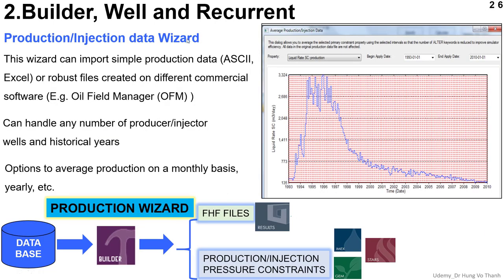Now we continue with the important section: production and injection data. When we talk about this, the data is related with the history matching in general. When your model or your field starts to produce for several years, they make the record for production data, production rate, measured pressure at the bottom hole pressure of the well.